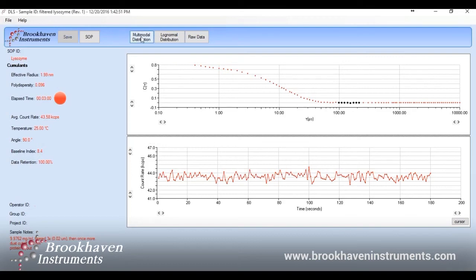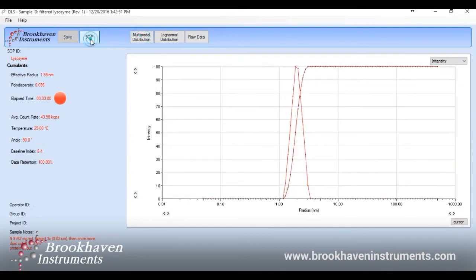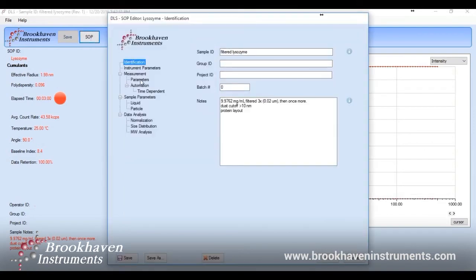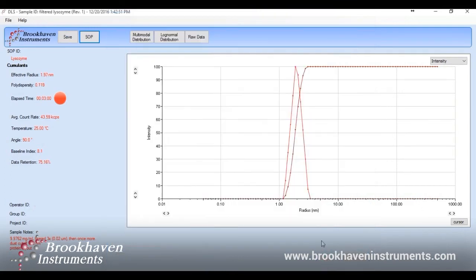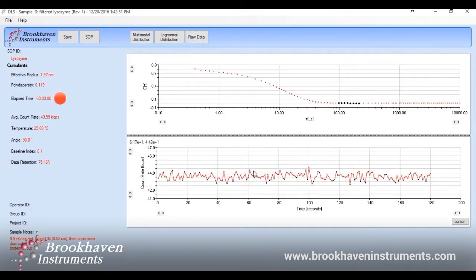If the dust filter is turned on in this case, it takes out a few more fluctuations that may be due to stray dust and helps create the perfect measurement. A radius of 1.97 nanometers is measured with a data retention rate of 75.16%. This radius is much smaller than what was measured before physically filtering the sample. There also is a much smaller difference in the size when the filter is on versus when it is off.